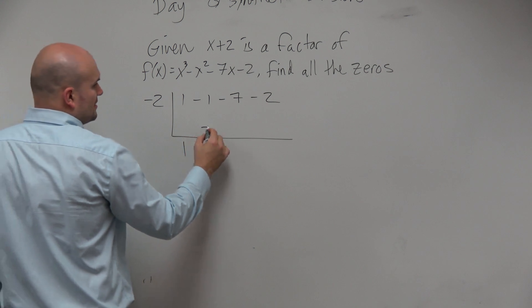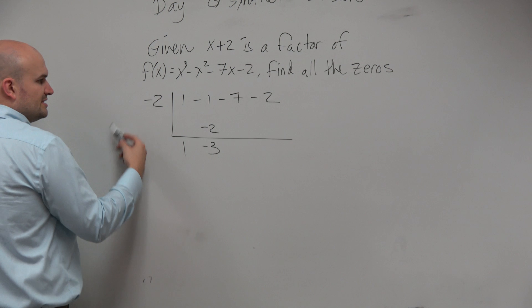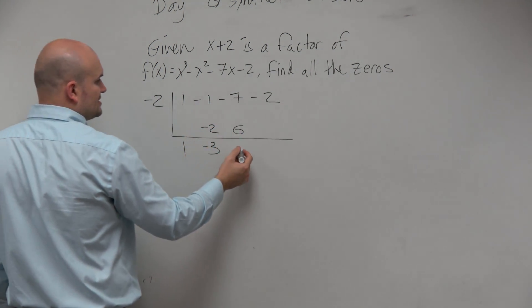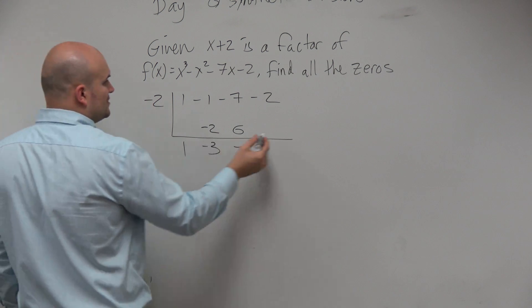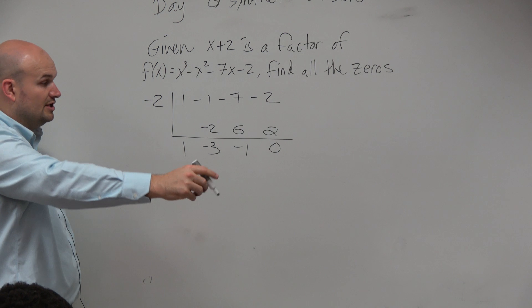1 times negative 2 is negative 2. Negative 1 plus negative 2 is negative 3. Negative 3 times 2 is going to be a positive 6. Negative 7 plus 6 is negative 1. Negative 1 times negative 2 is a positive 2. 0, which we said, so we're good there.